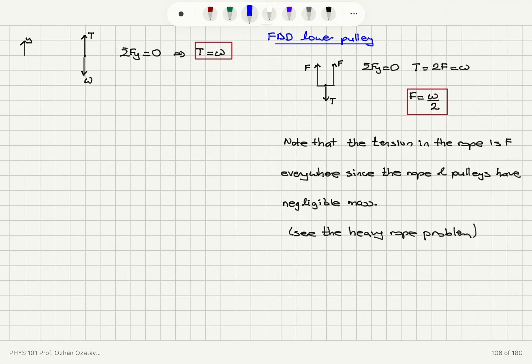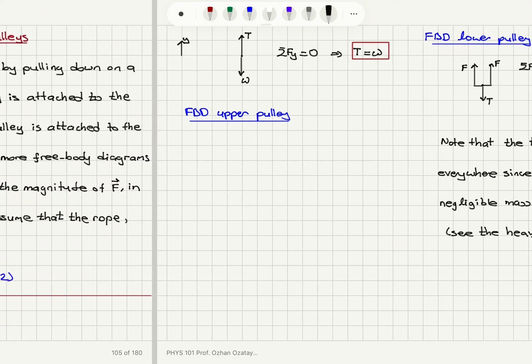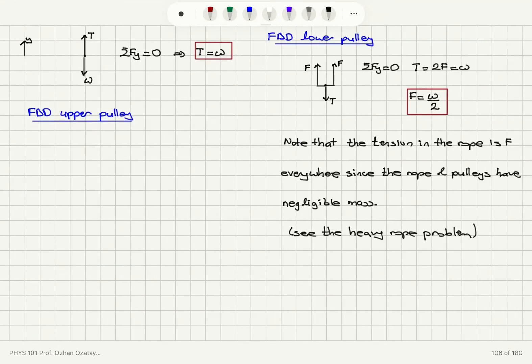And finally, we can draw a free body diagram for the upper pulley. There, we have a tension pointing up and two F pointing down. So, the upper pulley modeled as a particle feels a tension in the upper chain T_up and the two forces F and F pointing down.